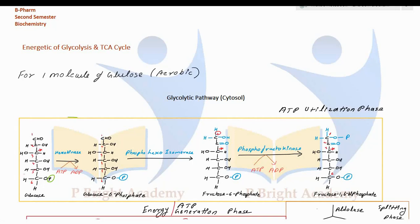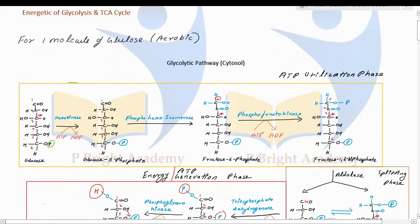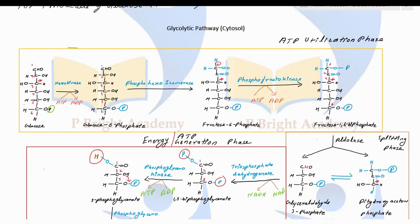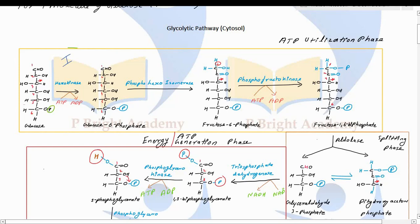One molecule of glucose when it undergoes the glycolytic pathway, it goes through different steps. We can classify it into three main categories: one is the ATP utilization phase, second is the splitting phase, and then we have the ATP generation phase. So the glycolytic pathway basically consists of these three parts.